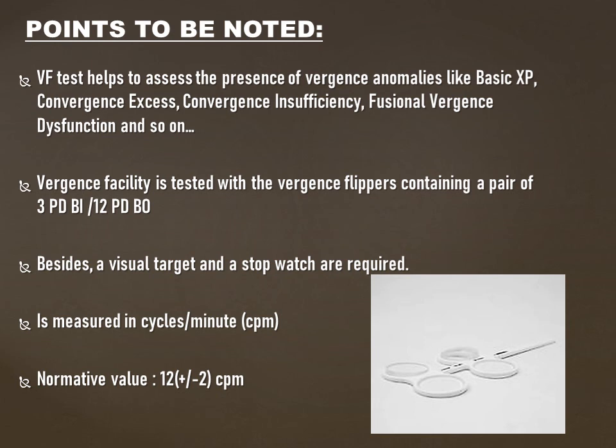Vergence facility is tested with a tool called vergence flippers, which comes with a prism combination of a pair of base-in prisms on one side and a pair of base-out prisms on the other side, because base-in prism induces divergence and base-out prism induces positive fusional vergence or convergence in the patient. The most commonly available vergence flipper comes with a combination of 3 prism diopter base-in on one side and 12 prism diopter base-out on the other side.